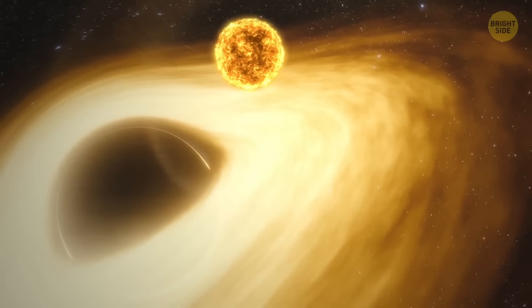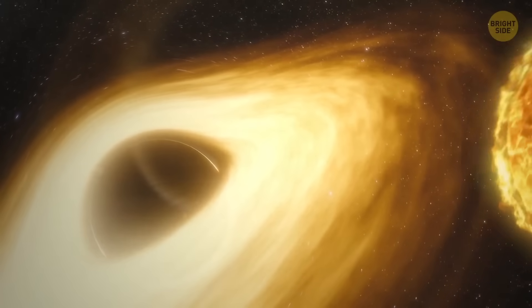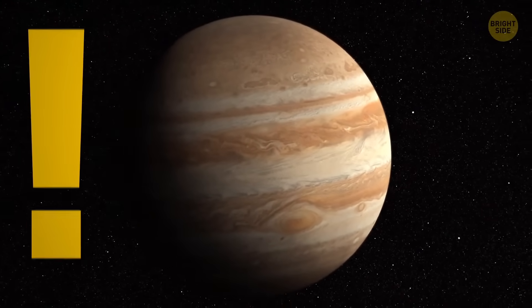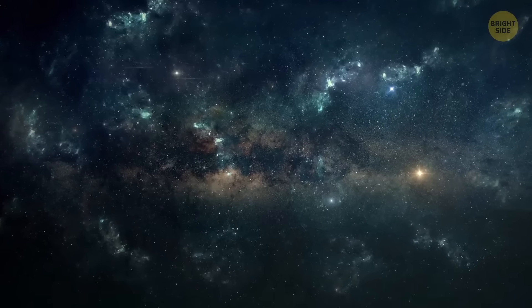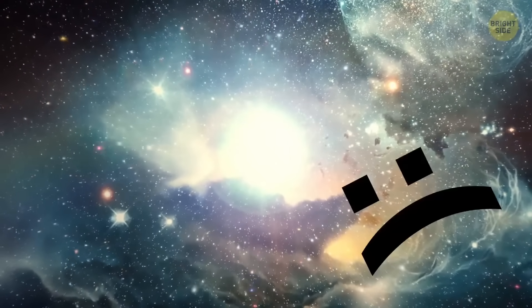Scientists believe one day it will be able to spiral away from its mean friend and turn into a planet the size of Jupiter in a trillion years. That's 70 times longer than the universe has existed so far, so it might not ever happen.